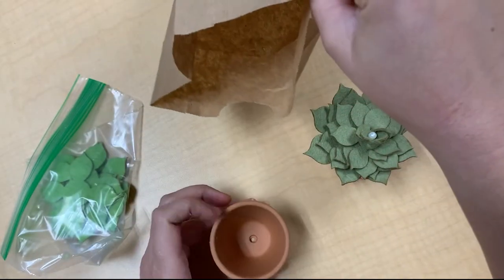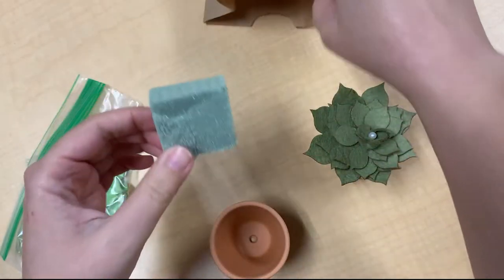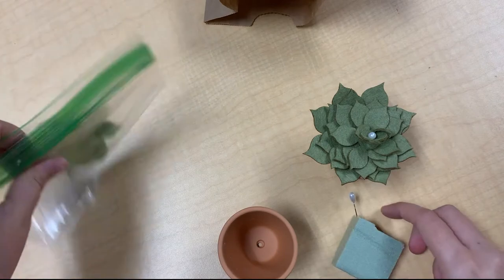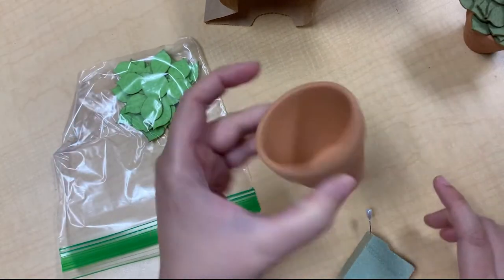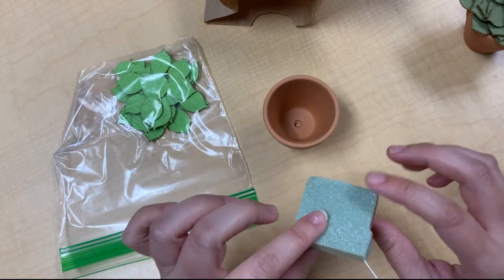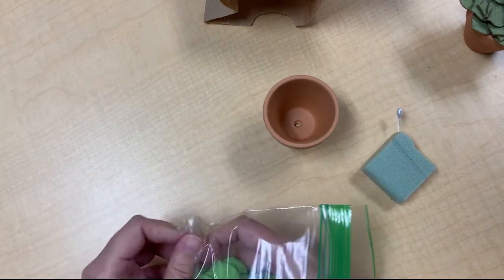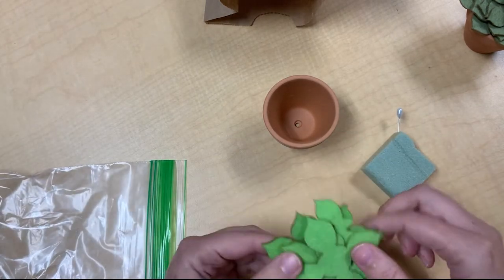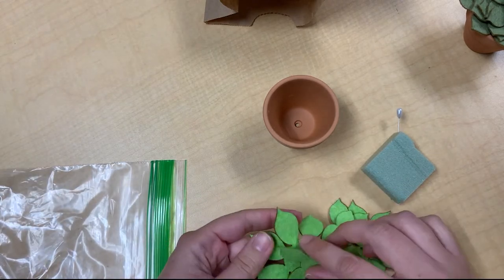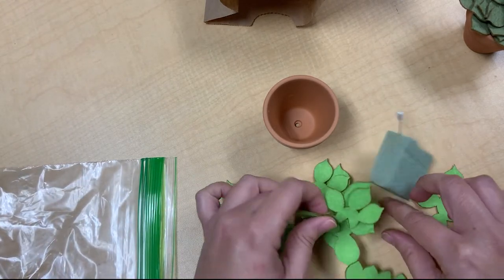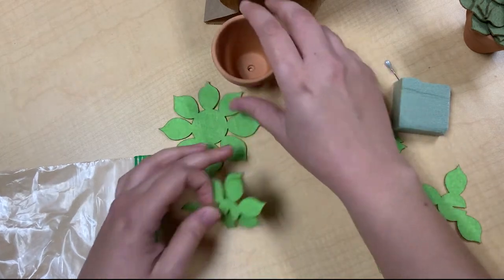So you should have a little pot, a styrofoam block with a pin in it, and your felt leaves. The leaves are different sizes. You can separate them out so you can know what you have to work with here.